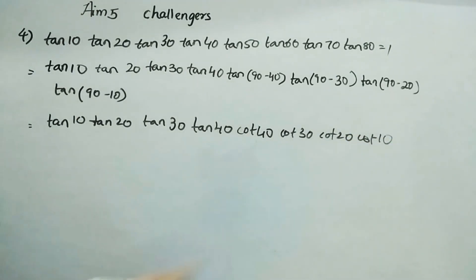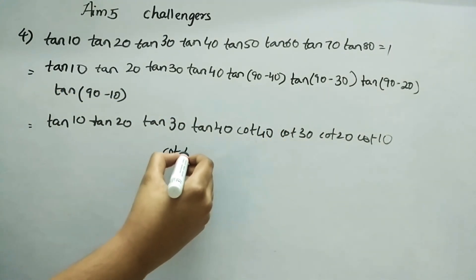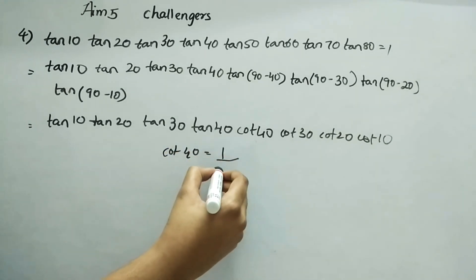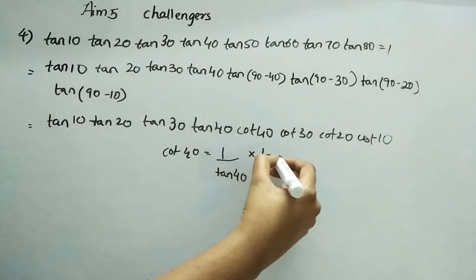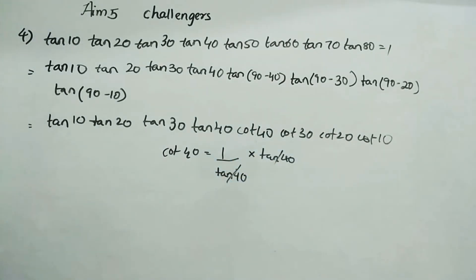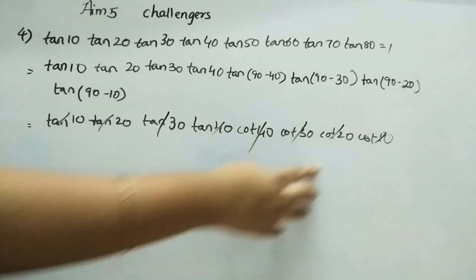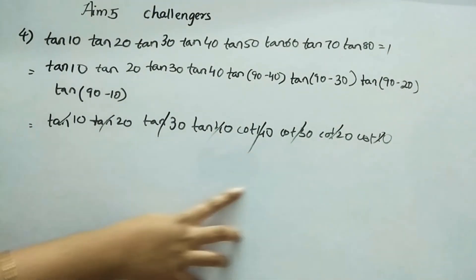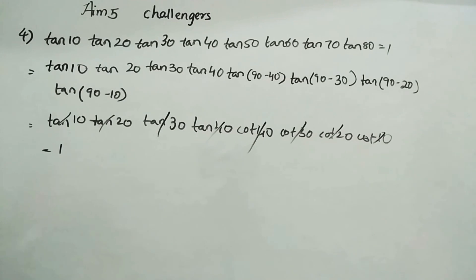Now, cot θ is 1 by tan θ. So for example cot40 × tan40 = 1. Every cot cancels with its corresponding tan: tan10·cot10, tan20·cot20, tan30·cot30, tan40·cot40 — everything cancels and what remains is 1, which equals the RHS. LHS equals RHS, proved.